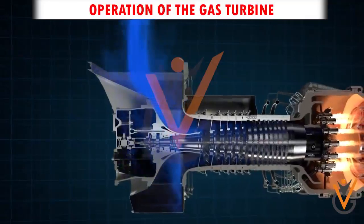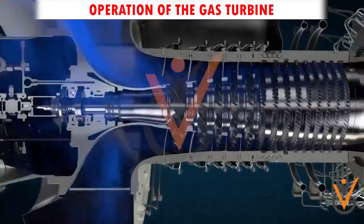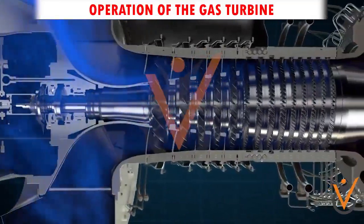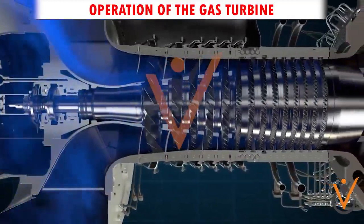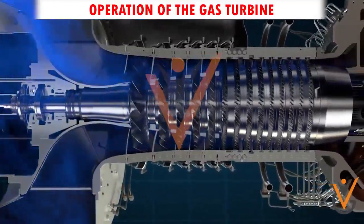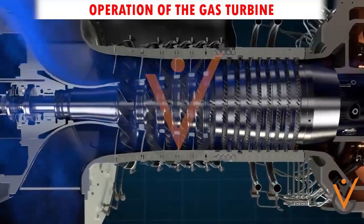The compressor is either a centrifugal or axial flow rotating device. It derives its driving power directly from the turbine, and is usually mounted on the same shaft.